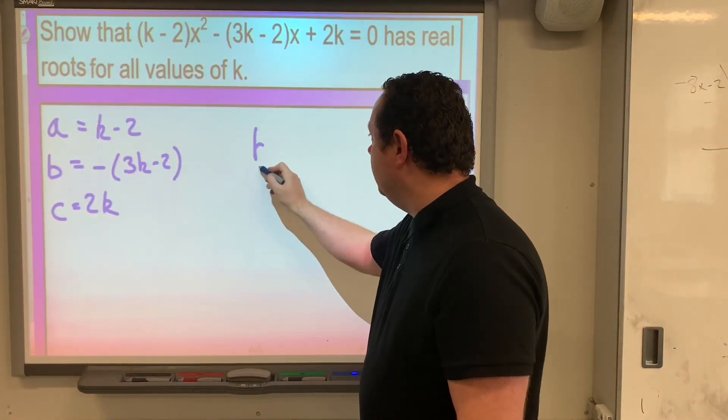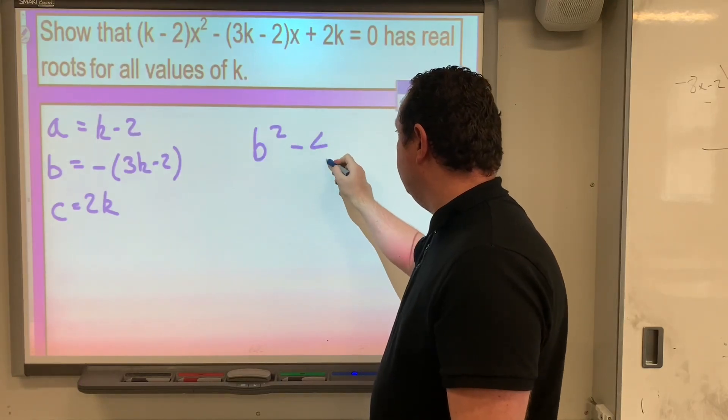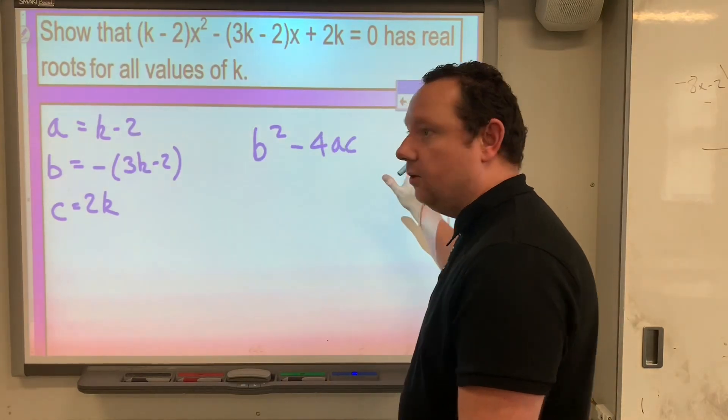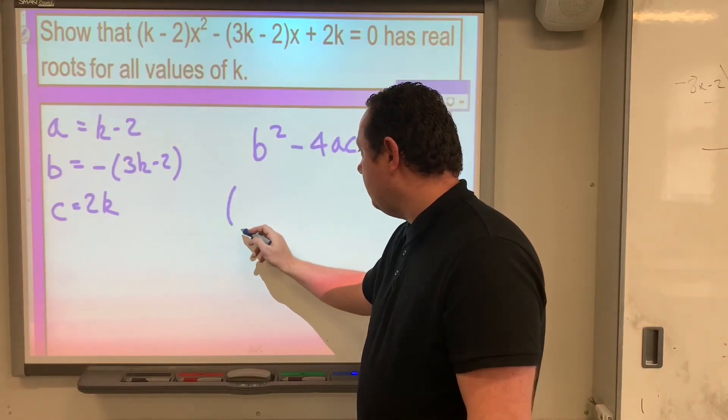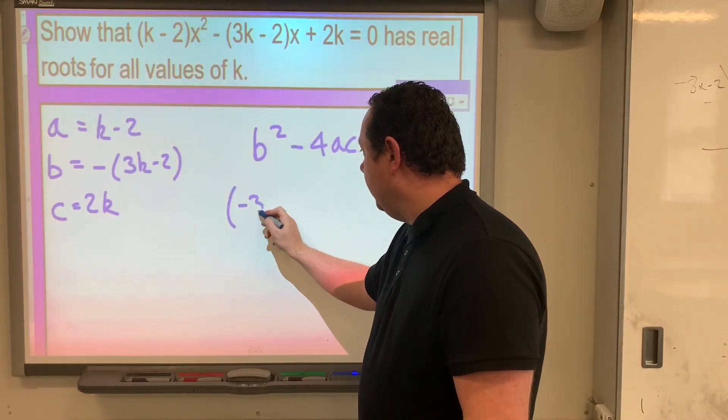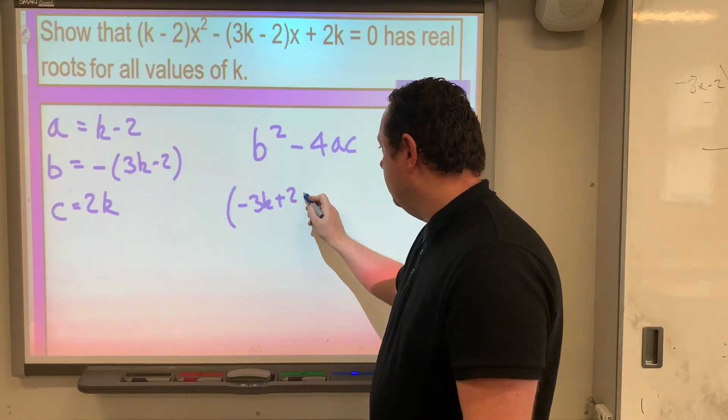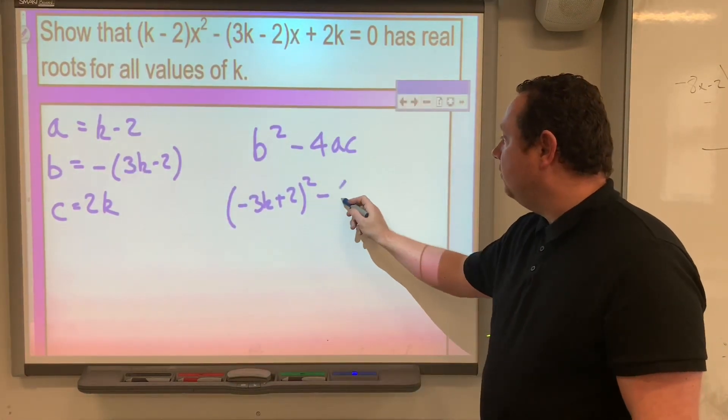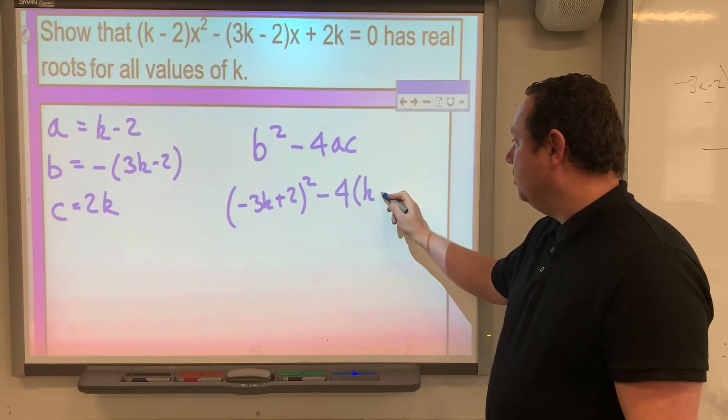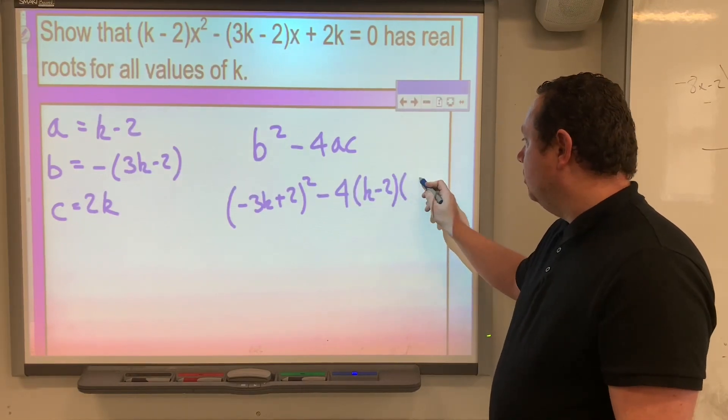So if we start off with b squared minus 4ac, now we don't know what it is but we're going to work it out. So b is minus 3k plus 2 squared, I'll just multiply the minus out, minus 4 times (k minus 2) times 2k.